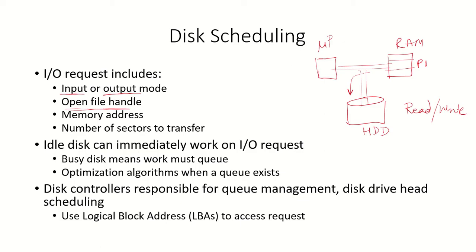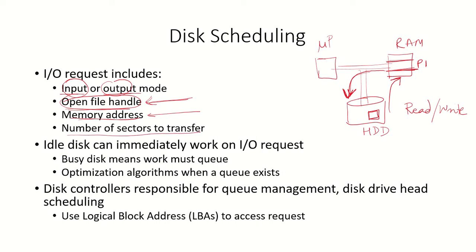The request also includes a pointer to the open file — the logical address of the file being accessed. The file may not be stored contiguously but across different sectors of the hard disk. Additionally, the memory address is required: if data is transferred from main memory to the hard disk, which address it comes from, or if transferred from disk to memory, where in memory it is to be written. Finally, the number of sectors to transfer is specified.